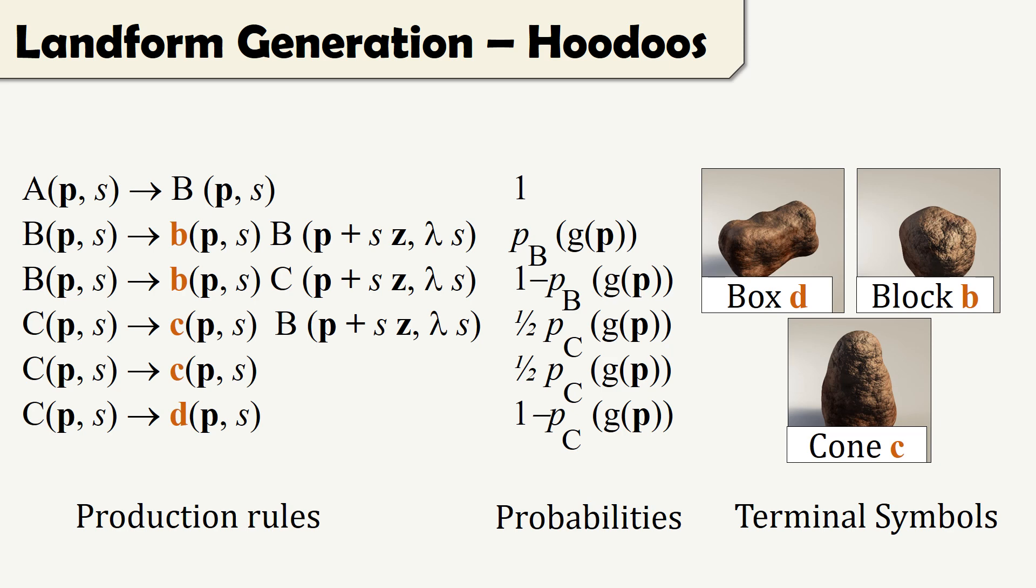We generate hoodoos using a grammar-like growth process. Here we see an example of a simplified open grammar with production rules, probabilities that make use of the environment, and terminal symbols that represent different shapes.